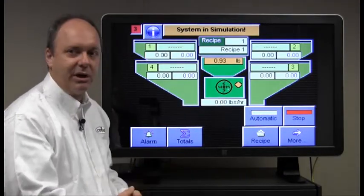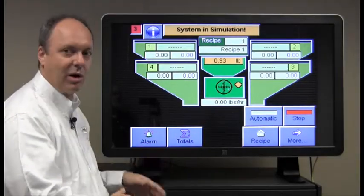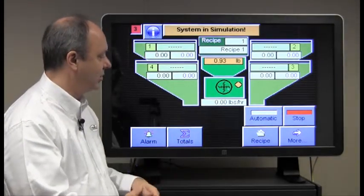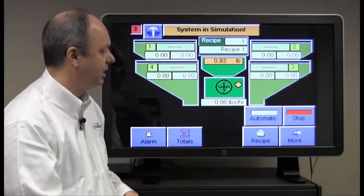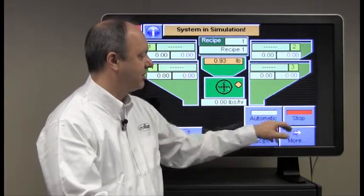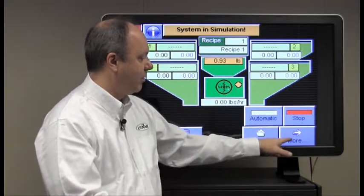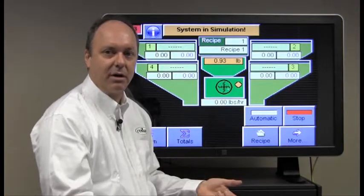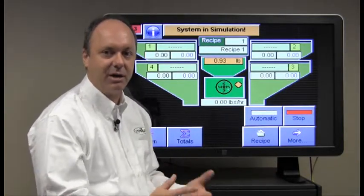We have the basic operator keys on this page: accessing alarms, accessing totals, changing the recipe, placing the system into automatic or stopping the system and we have a more button here which we'll cover later in other videos that gets us to setup and configuration things.